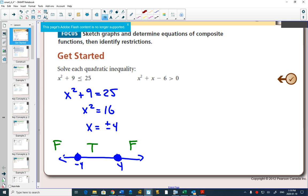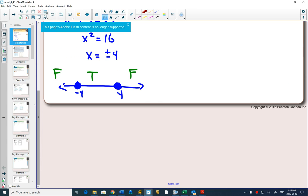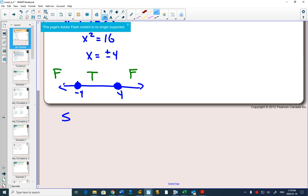And so, what we write as our solution is that x is between 4 and negative 4. And it can equal them as well because we had an equal sign and our dots were filled in to begin with.